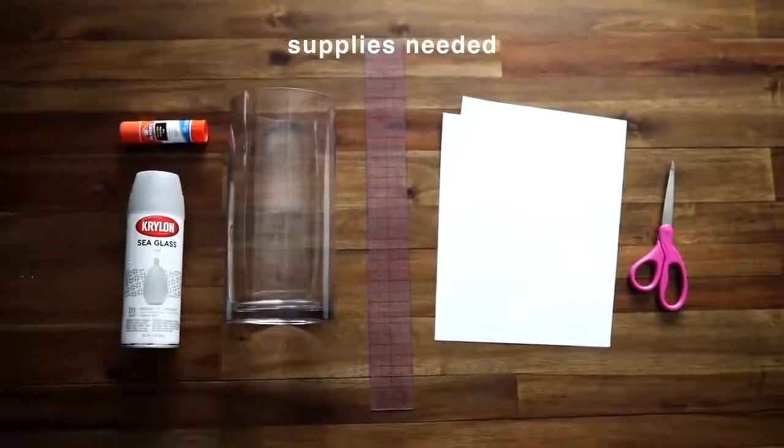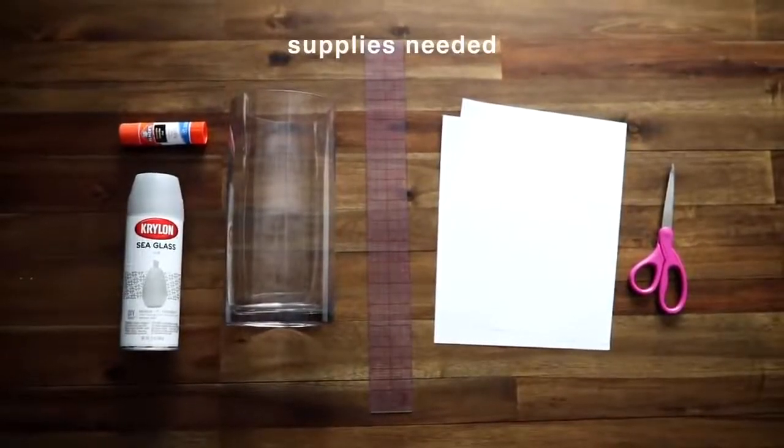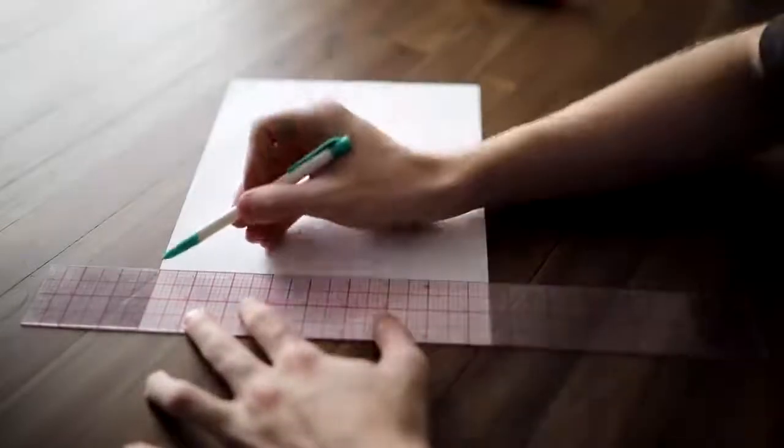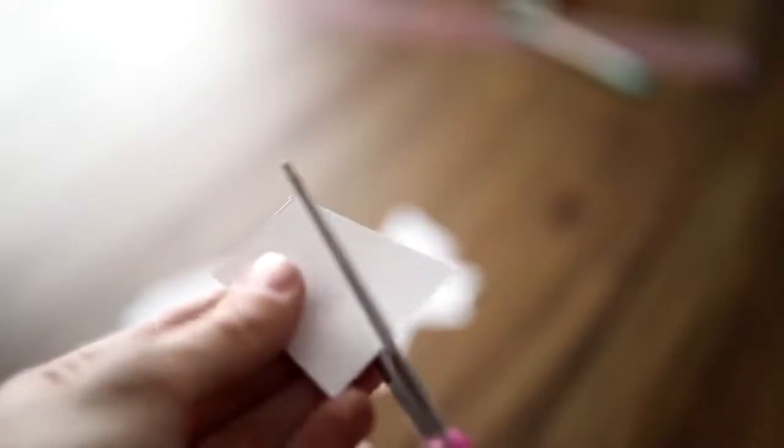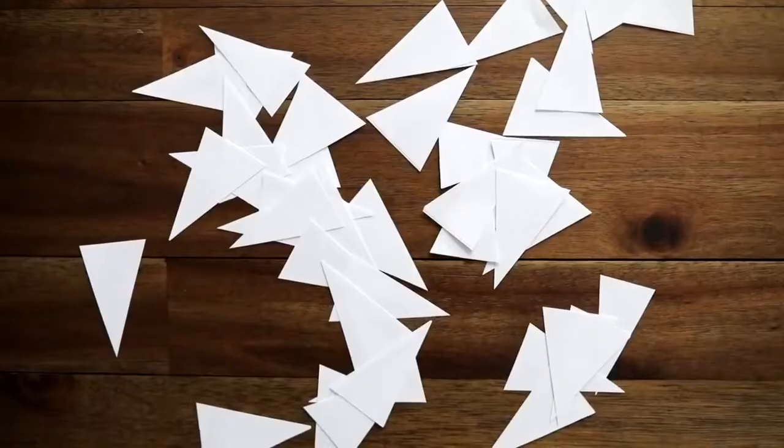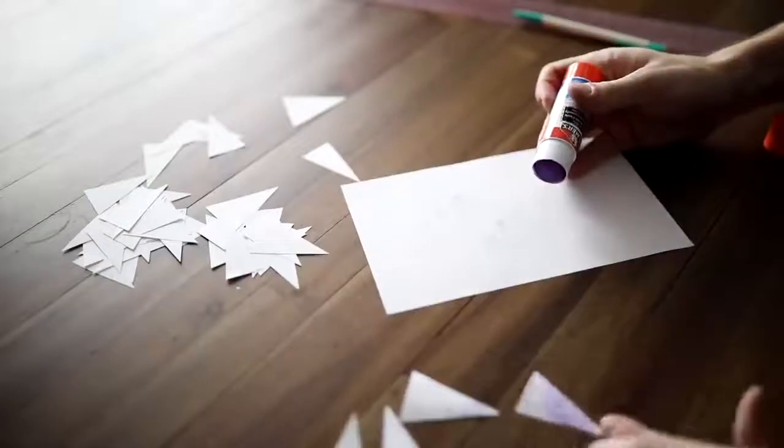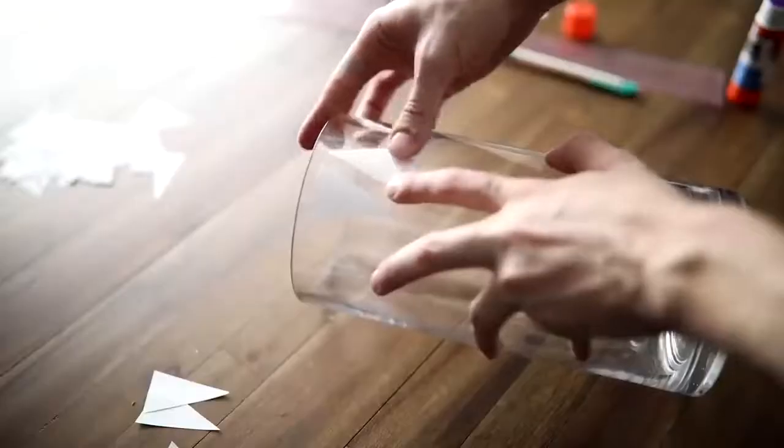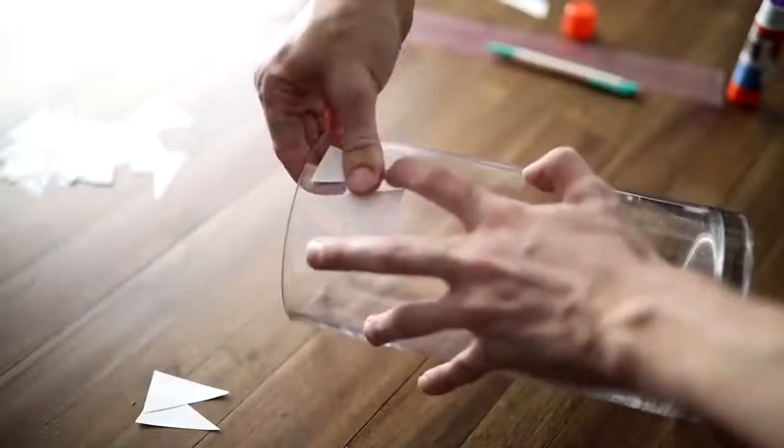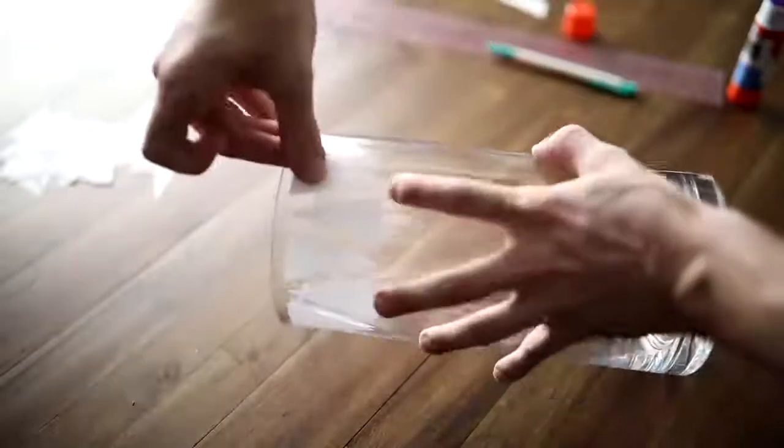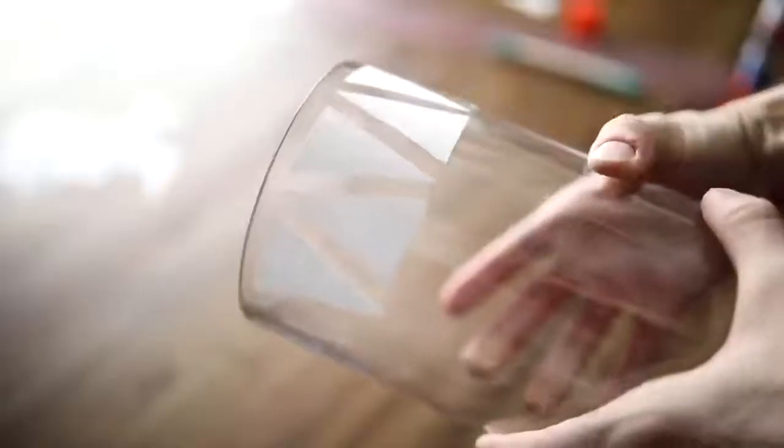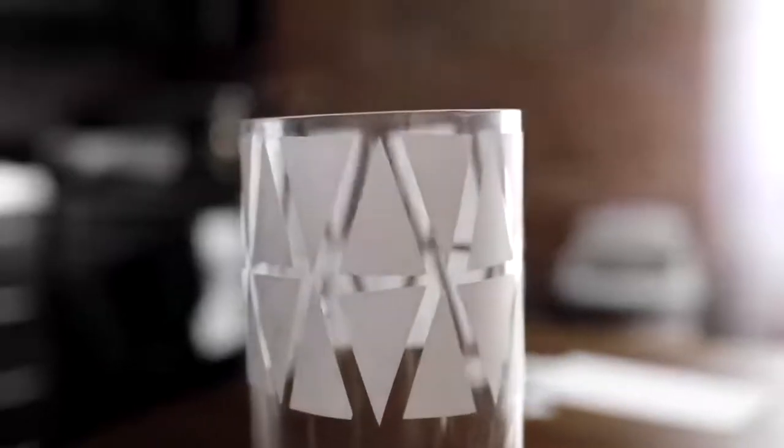DIY number two - all you're going to need is some sea glass spray paint, a glue stick, a vase, ruler, paper and scissors. I absolutely love the look of this frosted glass vase, it looked so expensive and very West Elm-esque. What I did was cut out two-inch strips from paper and cut out some triangle masks. You can cut out any shape you'd like out of regular old printer paper. Apply a bit of Elmer's glue stick to the back and let it dry, because once this dries it turns into a slightly tacky but removable masking piece, kind of like a post-it note.